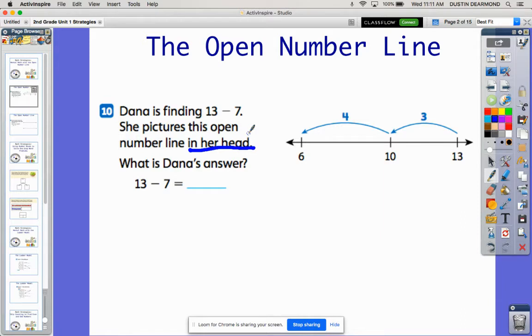So we look at the problem. We see that the problem is 13 minus 7, so she starts at 13. I can see that here on my open number line we're starting at the number 13, and I can tell she's jumping backwards by looking at the arrows on my jumps. So she starts out by jumping back to 10, taking away the 3 and making a 10 as an easy strategy.